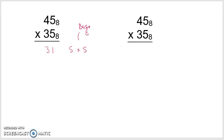5 times 4 in base 8 is 2 eights and 4 left over, so essentially 24. But this is 5 times 40, so that would be 240 in base 8. Then 3 times 5 — well 3 times 5 is 15. In base 8 that's 1 eight and 7 left over, so 17. But this is 30 times 5, so it's 170. Lastly, 3 times 4 in base 8 is 12 — that's 1 eight and 4 left over, so 14. But this is 30 times 40, so that's going to be 1400.